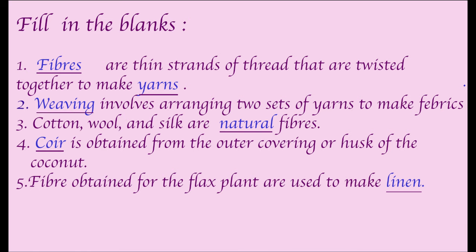Third: Cotton, wool, and silk are natural fibers. Fourth: Coir is obtained from the outer covering of the husk of the coconut. Fifth: Fiber obtained from the flax plant is used to make linen.